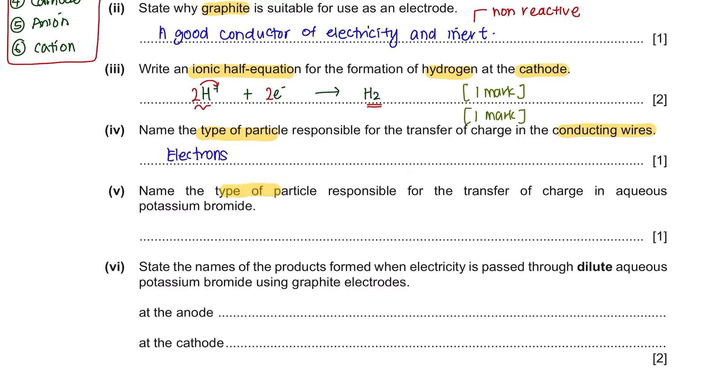Part 5. Name the type of particles responsible for the transfer of charge in aqueous potassium bromide. Now this would be the electrolyte, and as I mentioned, that would be your ions.